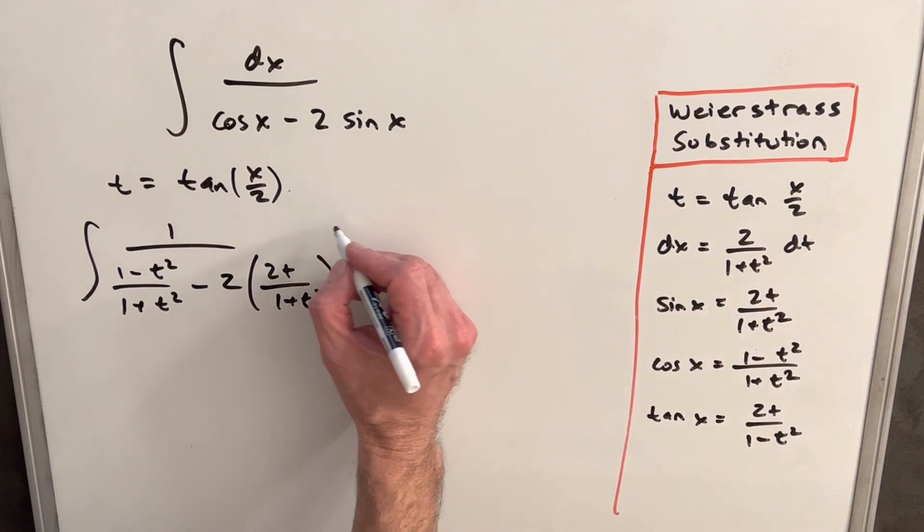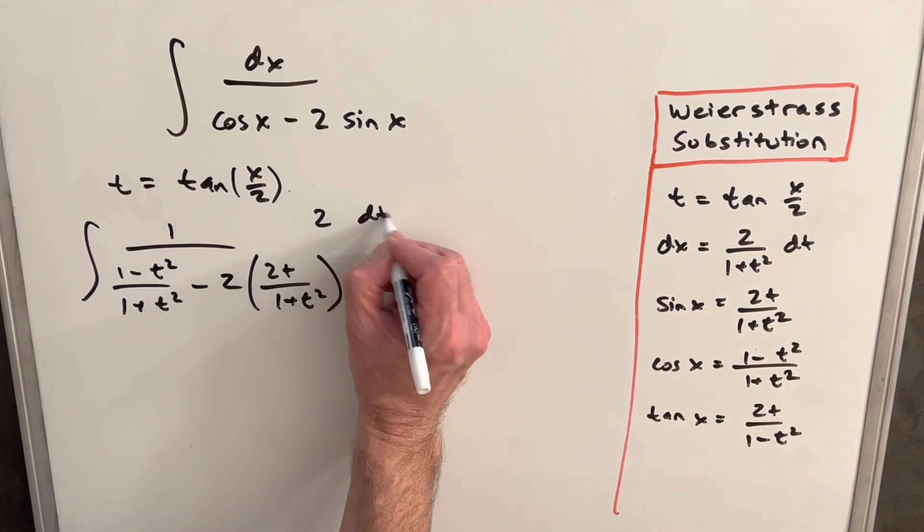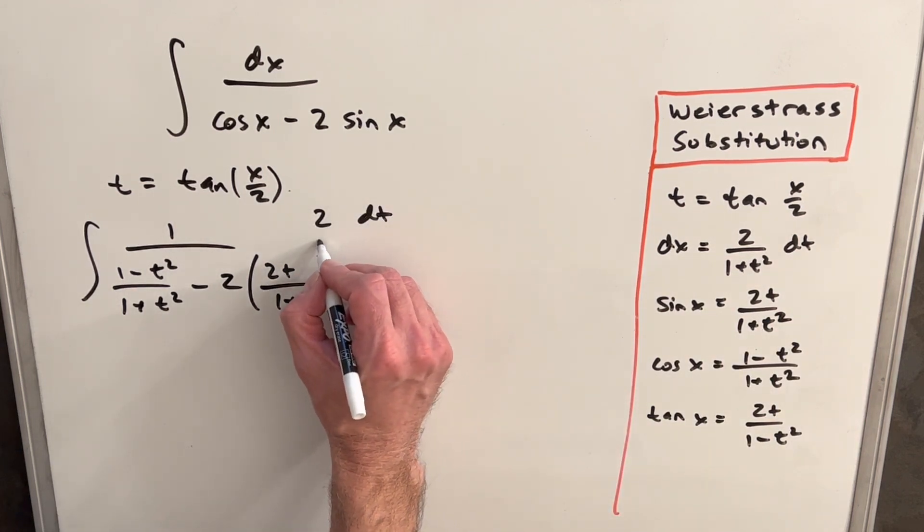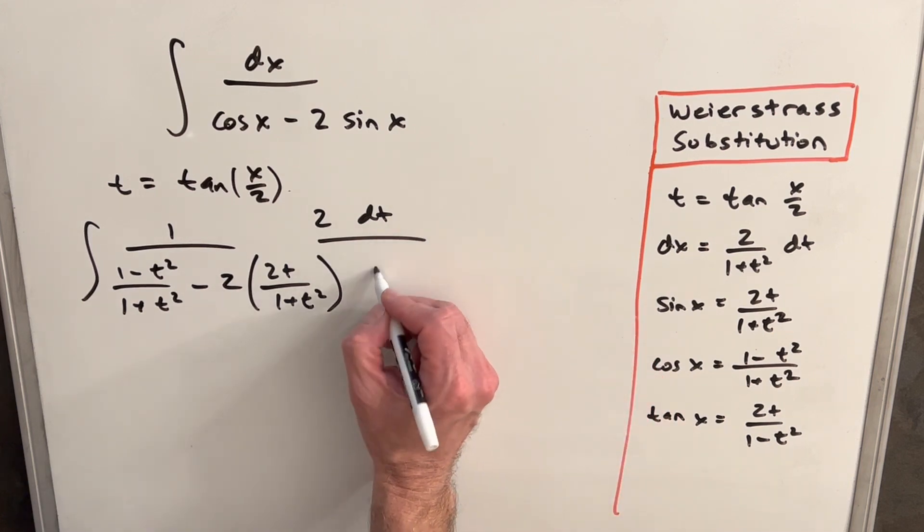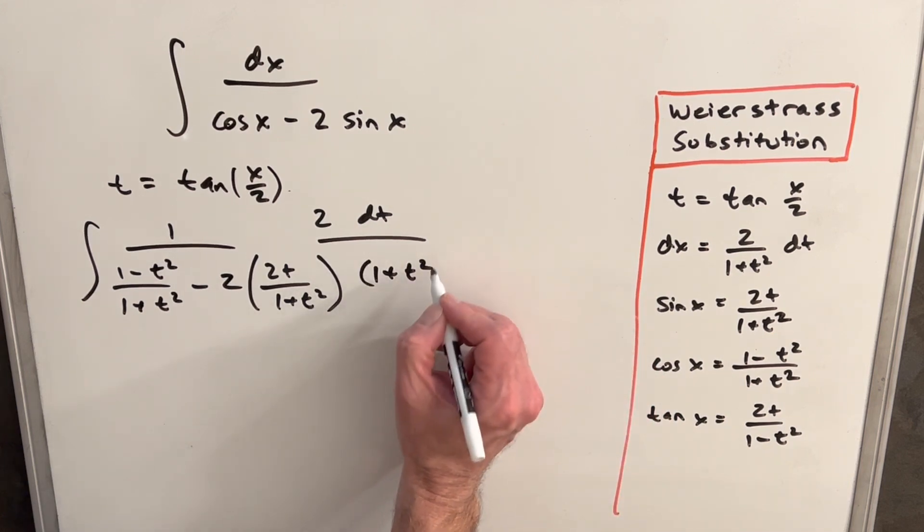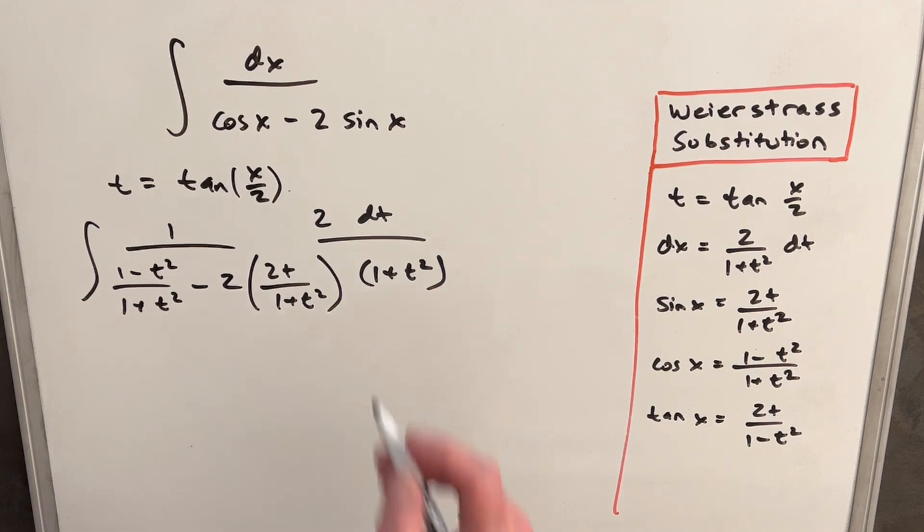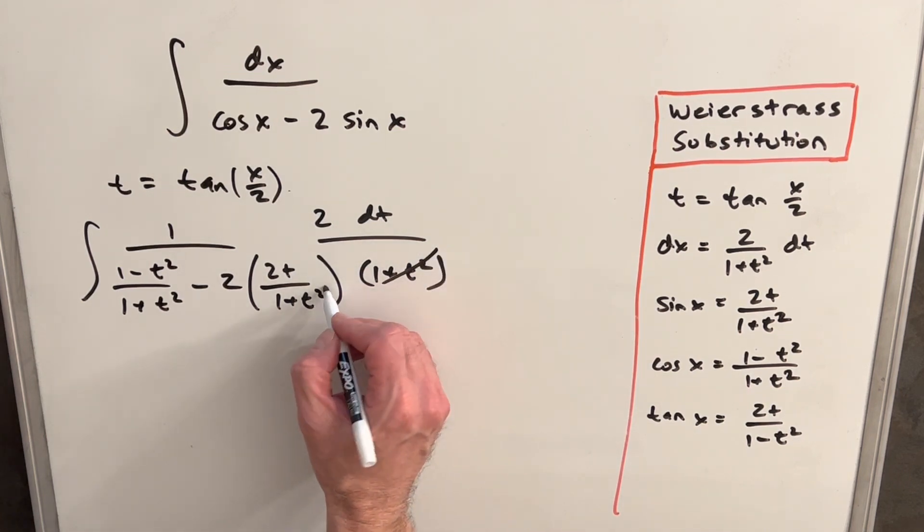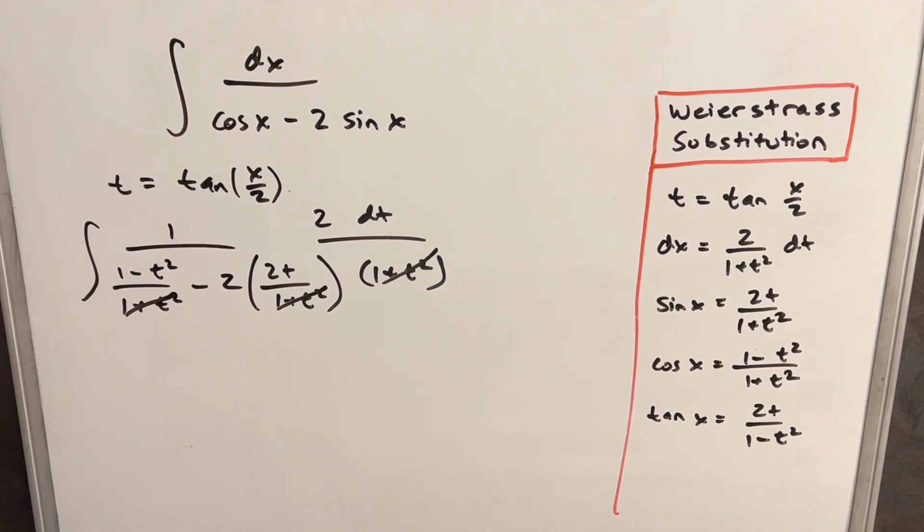And then dx is going to be 2 dt in the numerator, and in the denominator, we're going to have 1 plus t squared. What's going to happen now is we're going to have this cancellation with all these terms, the 1 plus t squared. So we end up getting a polynomial in the denominator, which is always something that we can integrate.